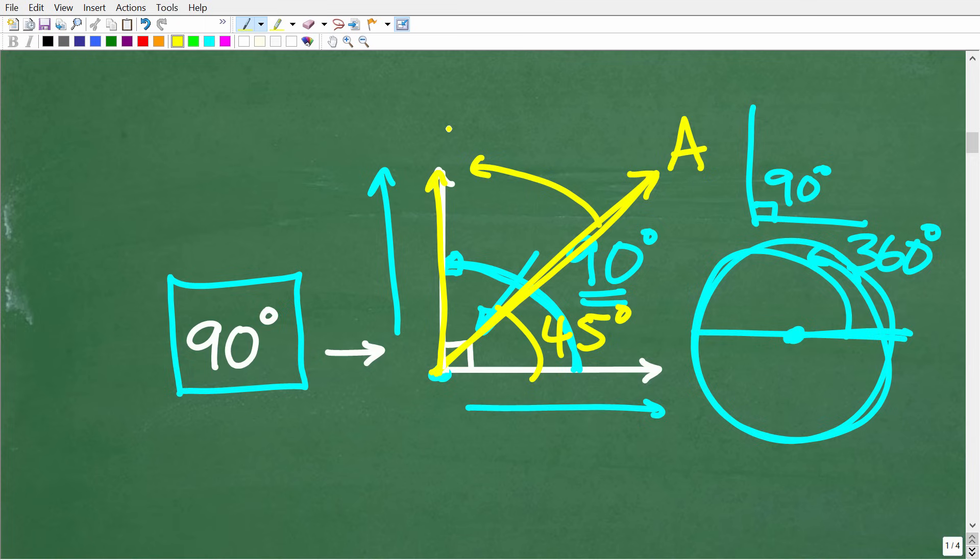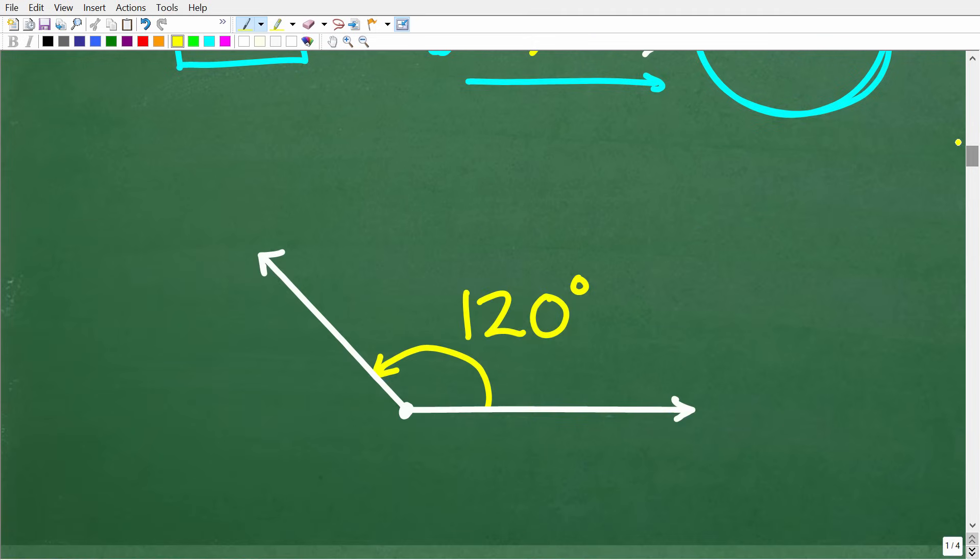Now if we exceed 90 degrees in this direction, for example, what type of angle are we dealing with? Well, we're talking about something called an obtuse angle. All right, so here is an obtuse angle. Now notice we still have our vertex and here we have a ray and another ray. So we're measuring the angle from here to here, and this, for example, could be like 120 degrees.